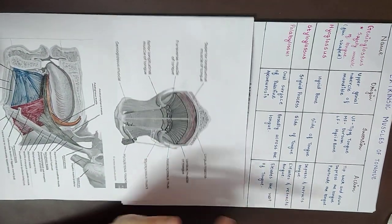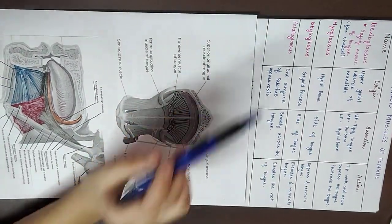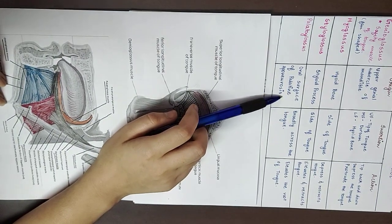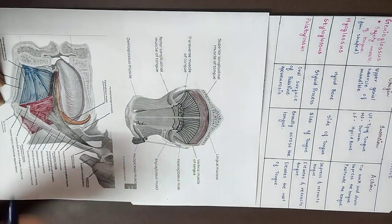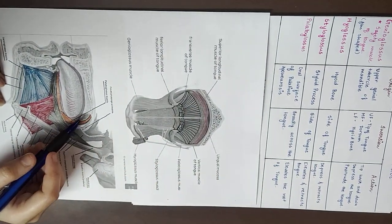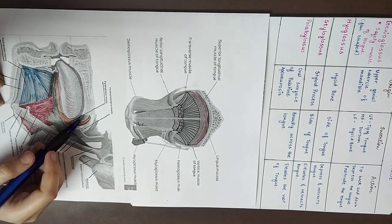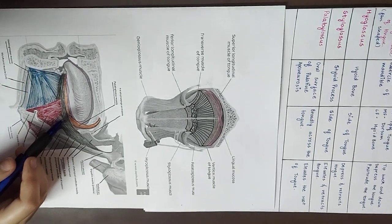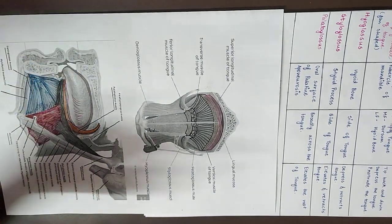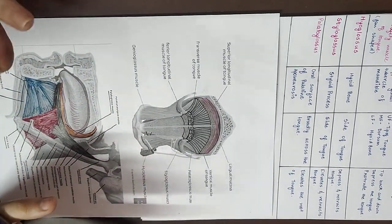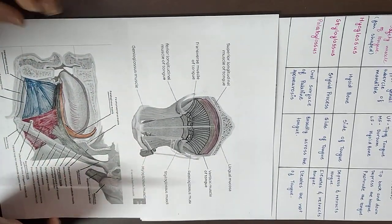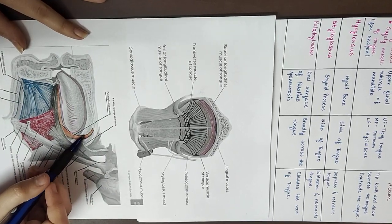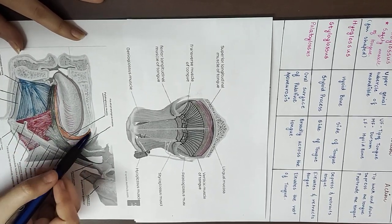Then there is the palatoglossus muscle. The palatoglossus muscle originates from the oral surface of the palatine aponeurosis, or more broadly from the soft palate, and attaches to the tongue. It functions to elevate the root of the tongue.